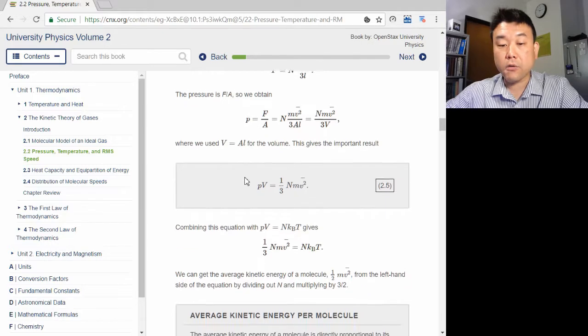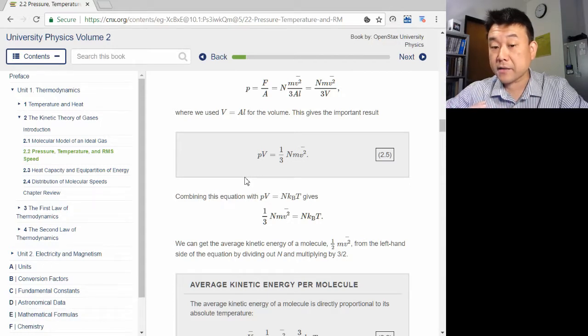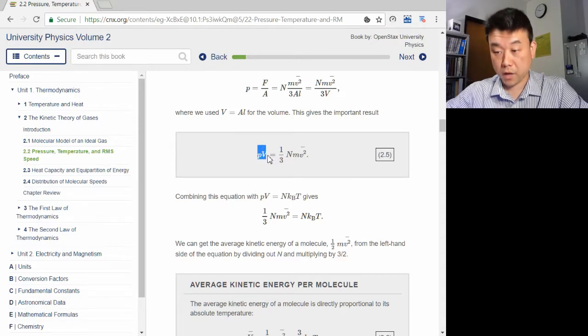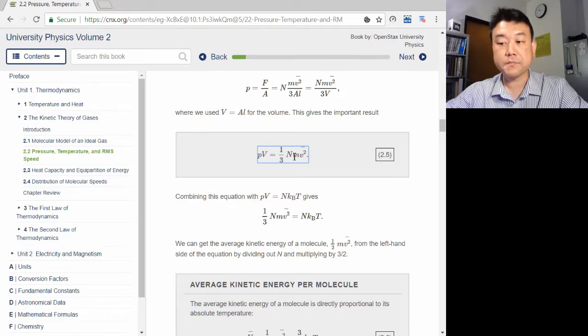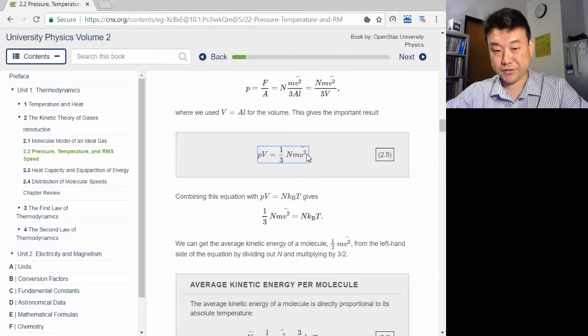the main takeaway of the derivation of ideal gas law under the molecular model of an ideal gas is equation 2.5. The product of pressure and volume is equal to one-third number of molecules of gas times mass of each molecule of gas times speed squared averaged.